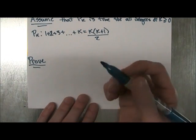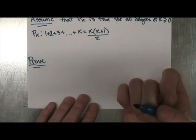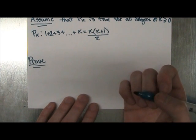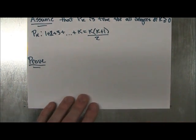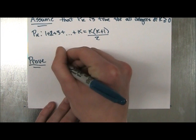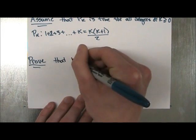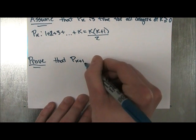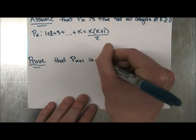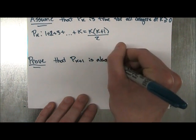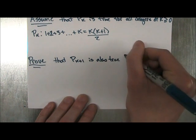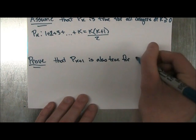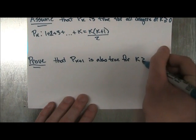Okay, so now what we're going to do is that because we assume Pk is true for any integer k greater or equal to 0, we have to make sure that it's also valid or true for the integer after that. So what that's going to be is that we're going to prove that Pk plus 1, so the integer after, is also true for all integers of k greater or equal to 0.